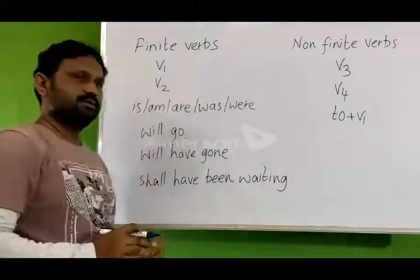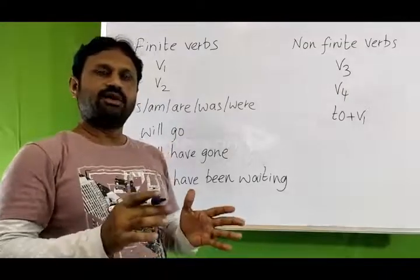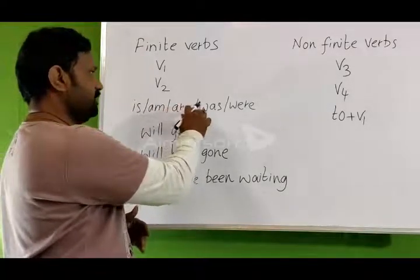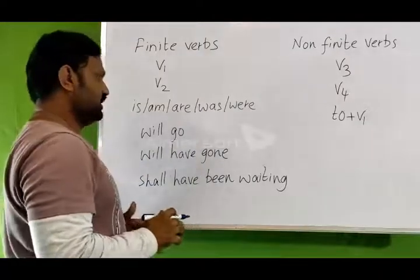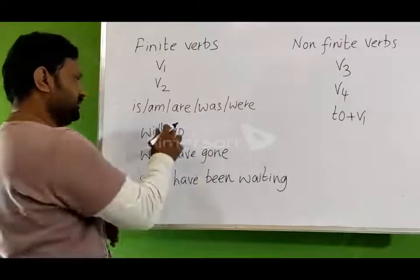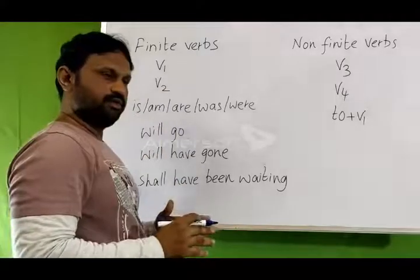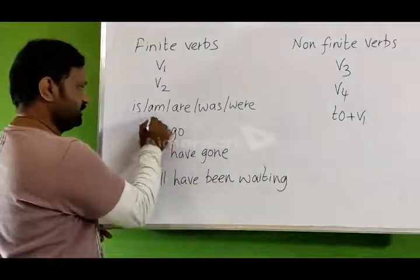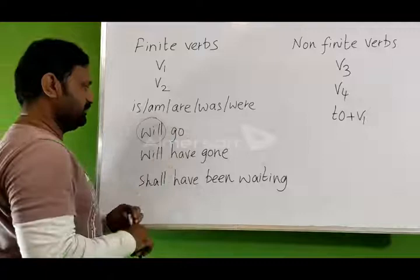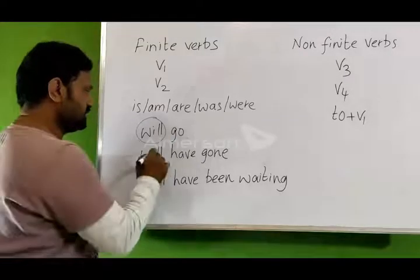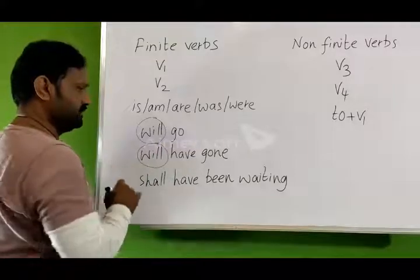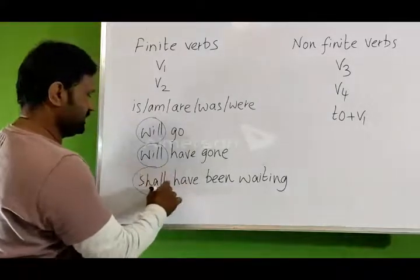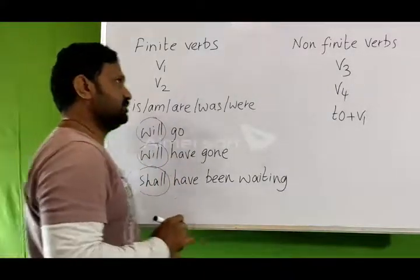Next, V2 forms — past tense forms, meaning the second form of the verb, are finite verbs. Next, all the helping verbs — is, am, are, was, were — these are all finite verbs. For example, 'We will go' is a two-word helping verb. If you find a two-word helping verb in a sentence, the first helping verb is a finite verb. The same applies for three-word or multi-word helping verbs — the first helping verb, such as 'shall,' is always the finite verb.